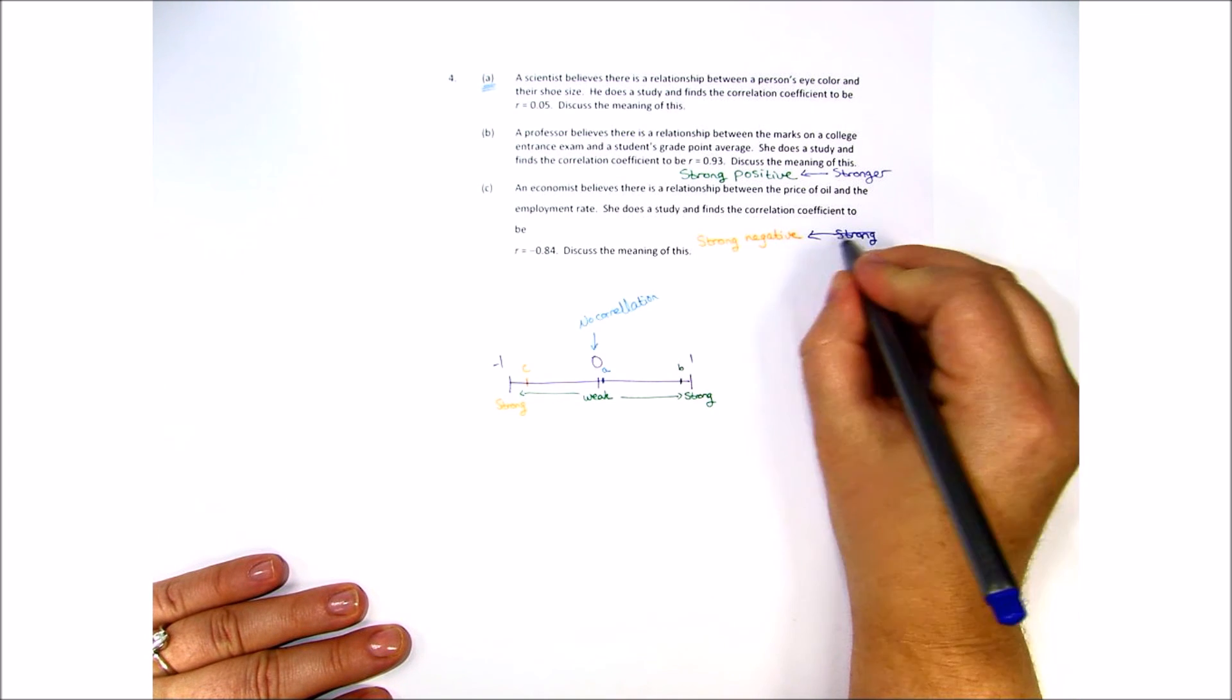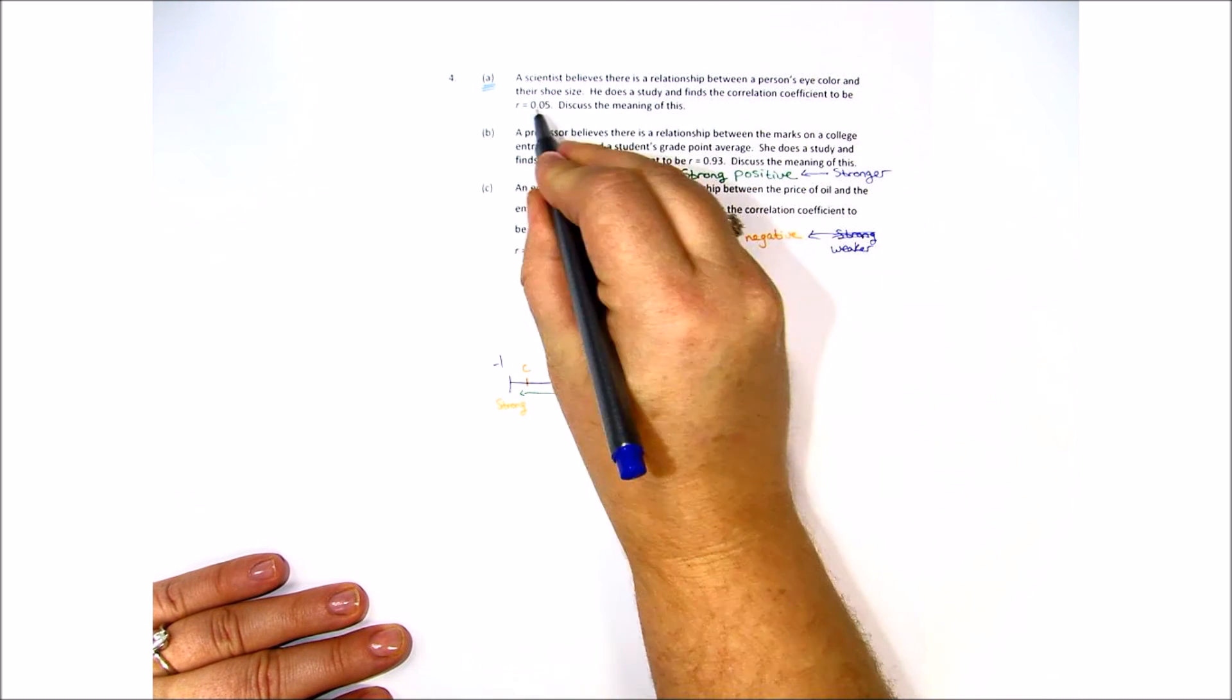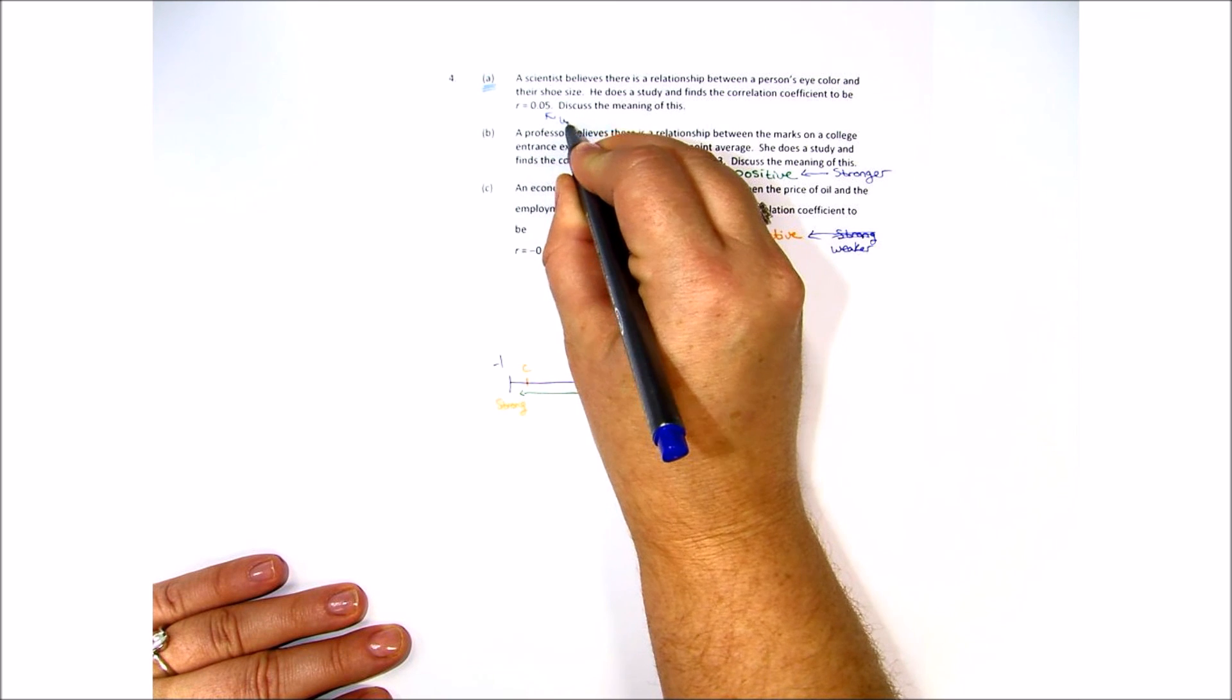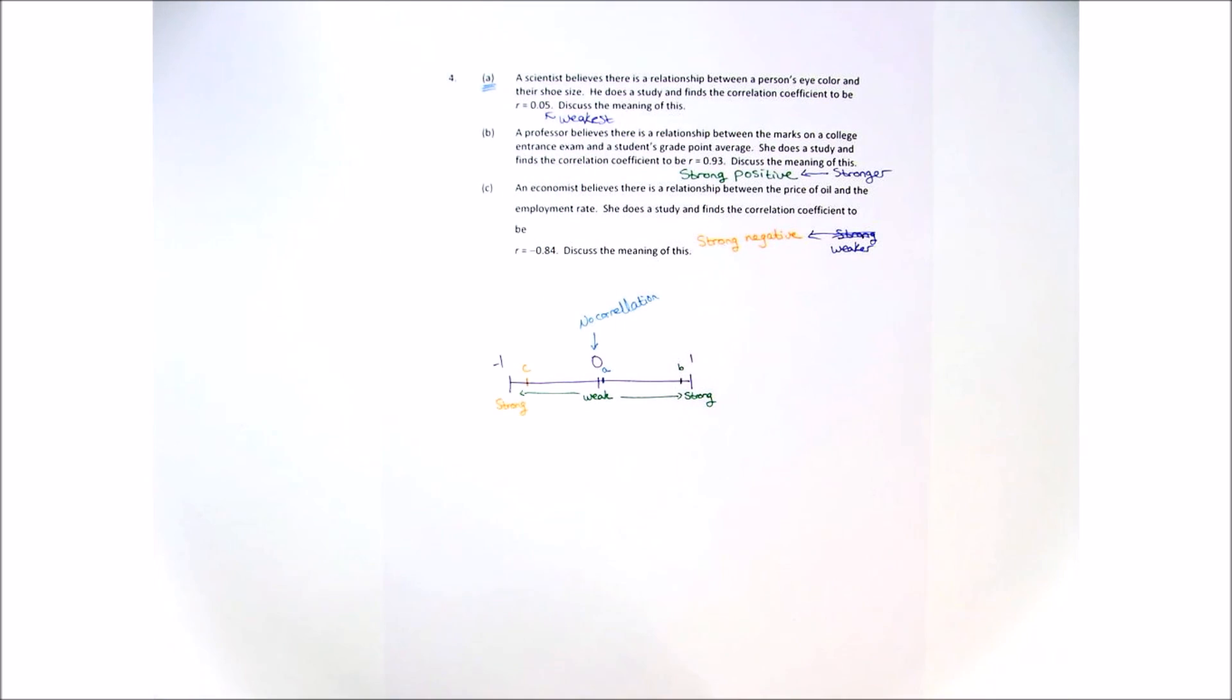I think you would actually go weaker. However, the r equals 0.05 is the weakest answer that we have.